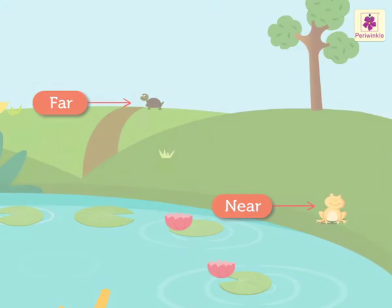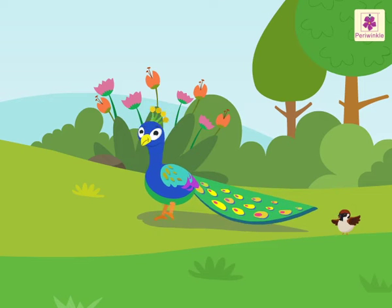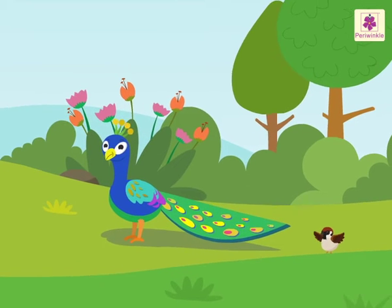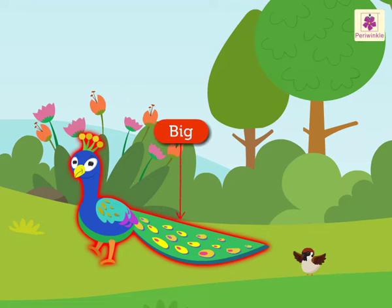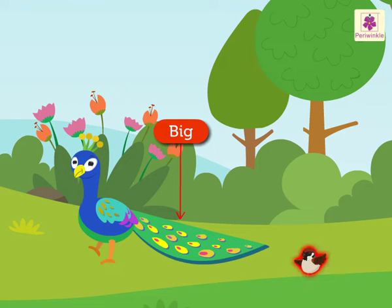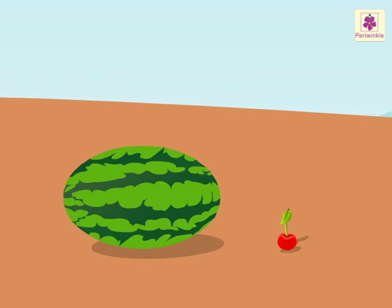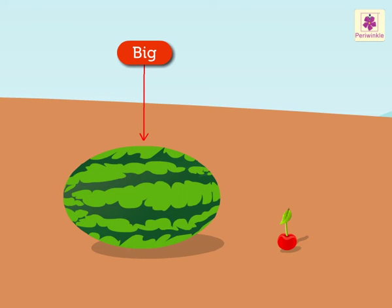Next is big and small. Look at these beautiful birds. Let us compare their sizes. Peacock is a big bird, and Sparrow is a small bird. Now, look at these fruits. The watermelon is big, and the cherry is small.